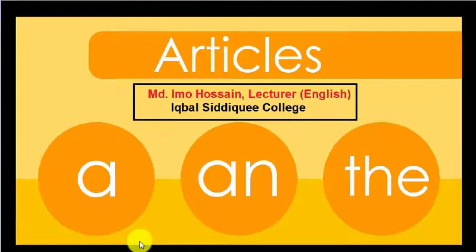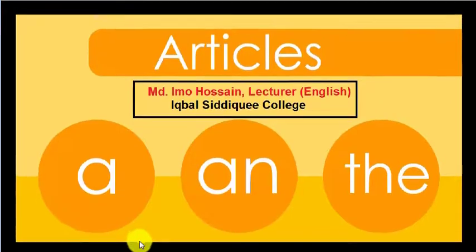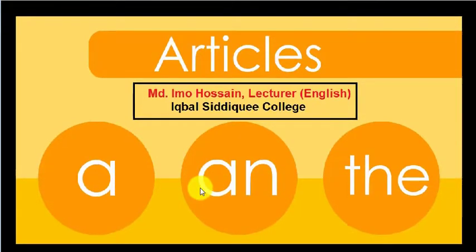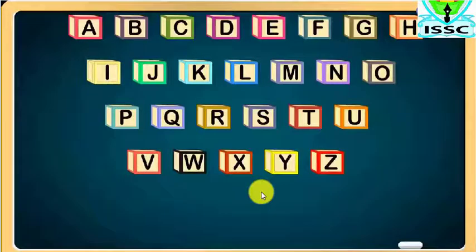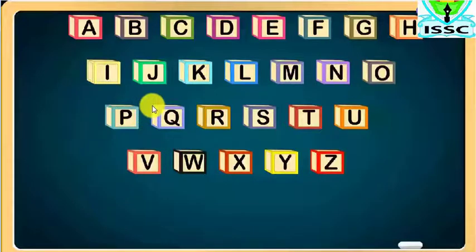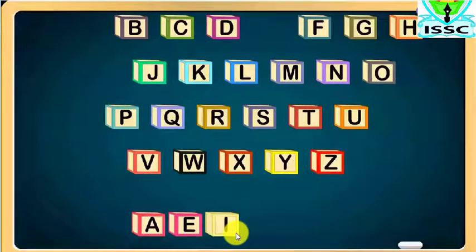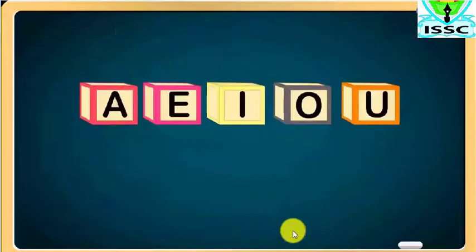Hello students, today we are going to discuss one of the most talked about and easiest topics, which is equally important for all classes. It's nothing but articles. There are two types of articles: indefinite and definite. We are going to talk about vowels — A, E, I, O, U — and consonants.